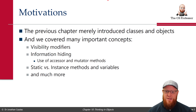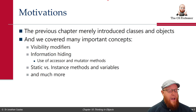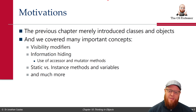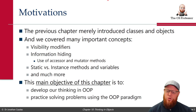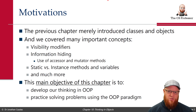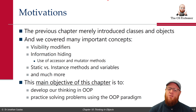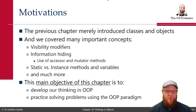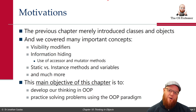Those concepts include visibility modifiers, information hiding, the use of accessor and mutator methods — those getters and setters — static versus instance, which is really important: understanding those static methods and static variables compared to their instance counterparts, and many other small nuances. The main objective of this chapter is really just to reinforce those things, to practice them, to develop our thinking with this new OOP paradigm, and to illustrate how it's more effective and more meaningful to help you solve problems.